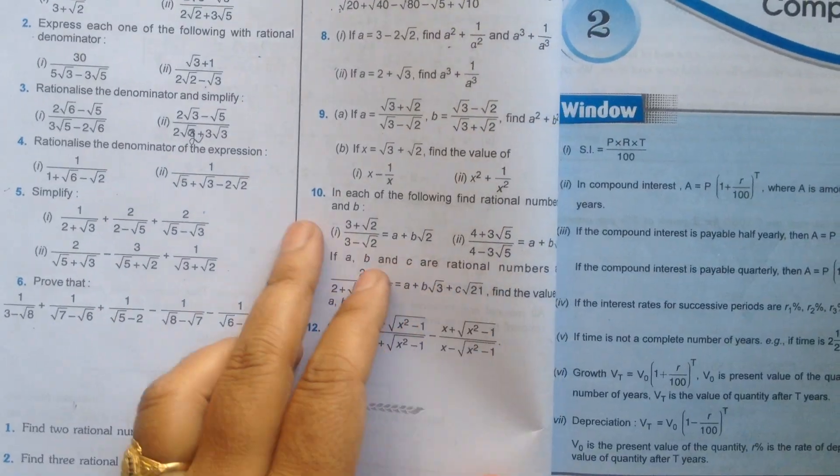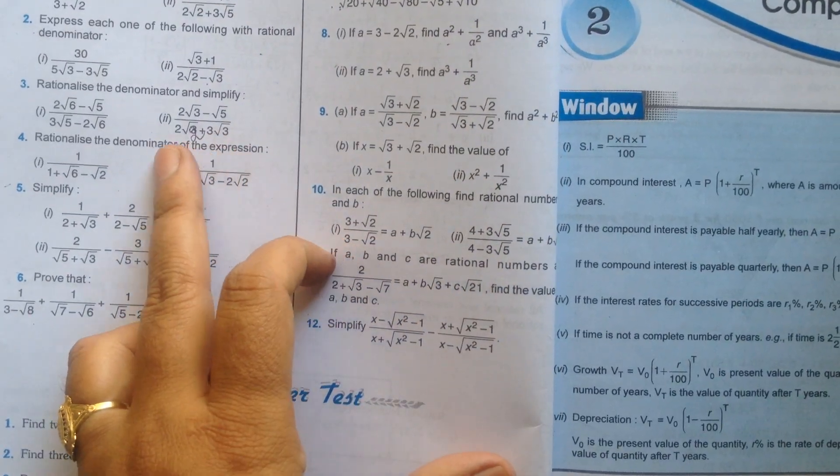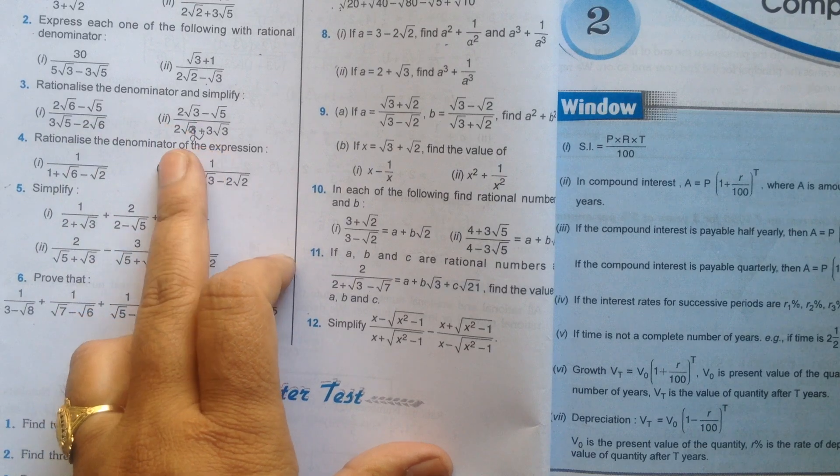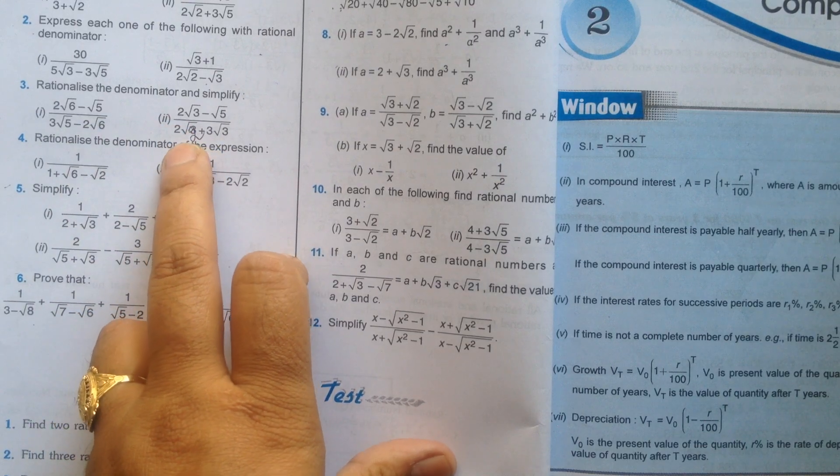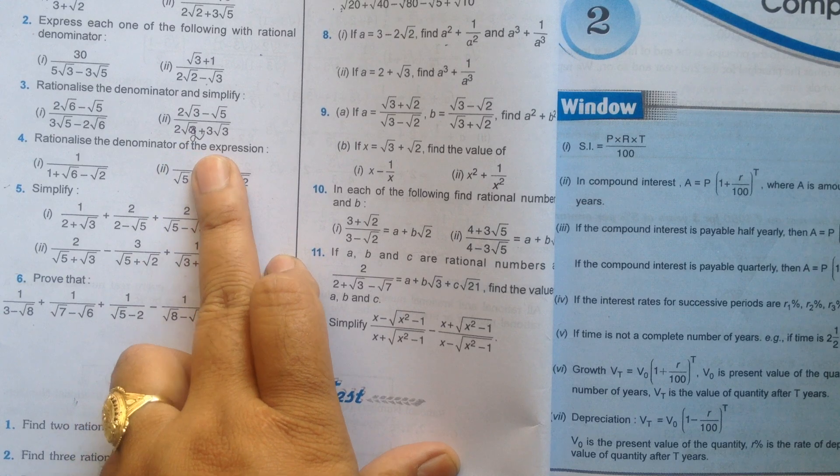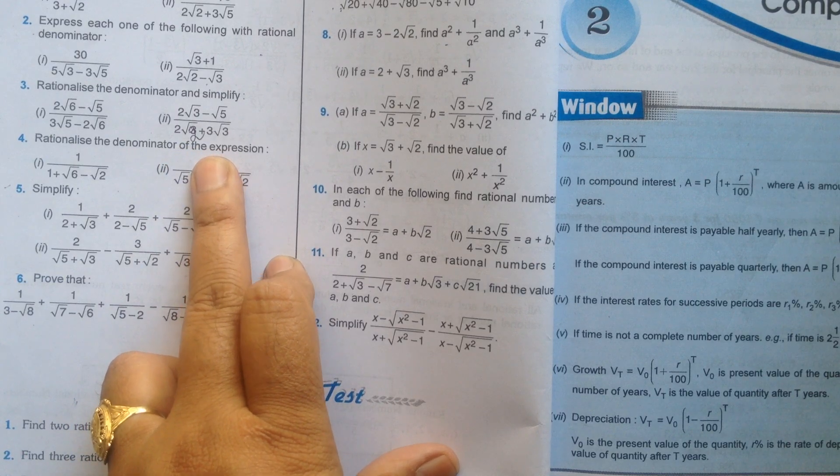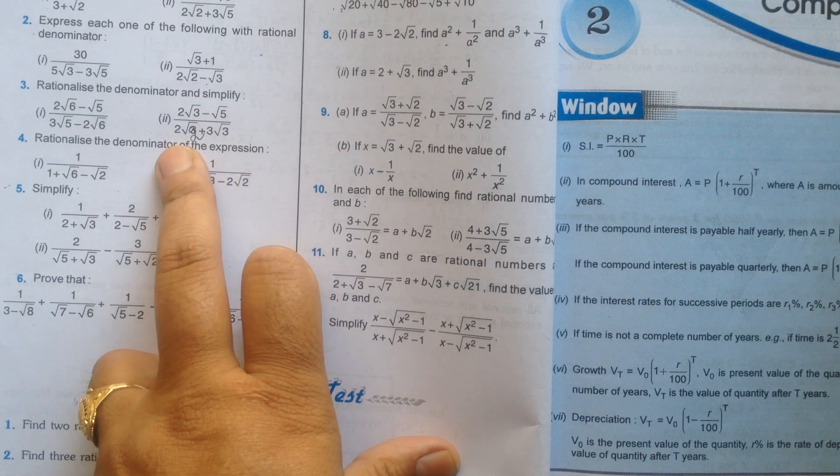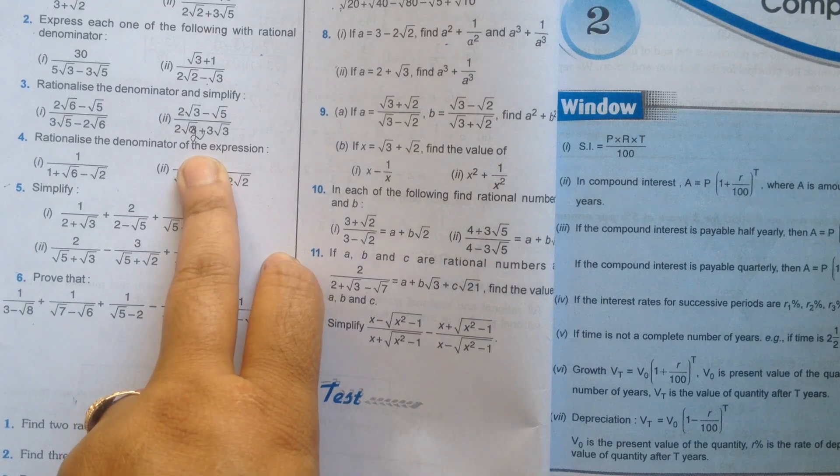So all the sums are like this. All the sums we will do. And in question number 3, part number 2, change the statement. Here it is written 2 square root 3, but the answer doesn't come with 2 square root 3. Here you will write 2 square root 2. Change it.